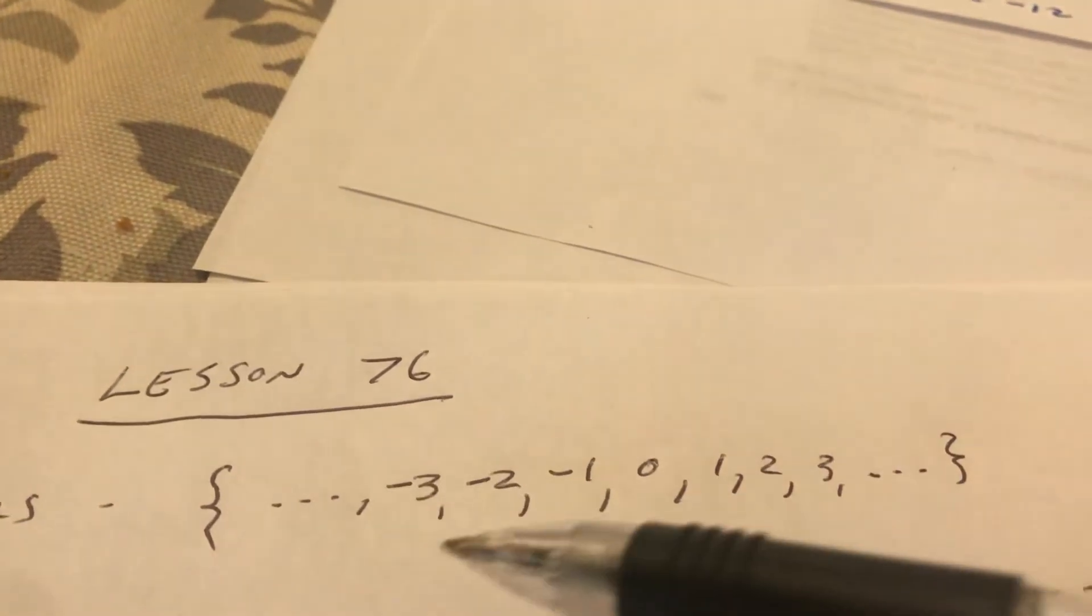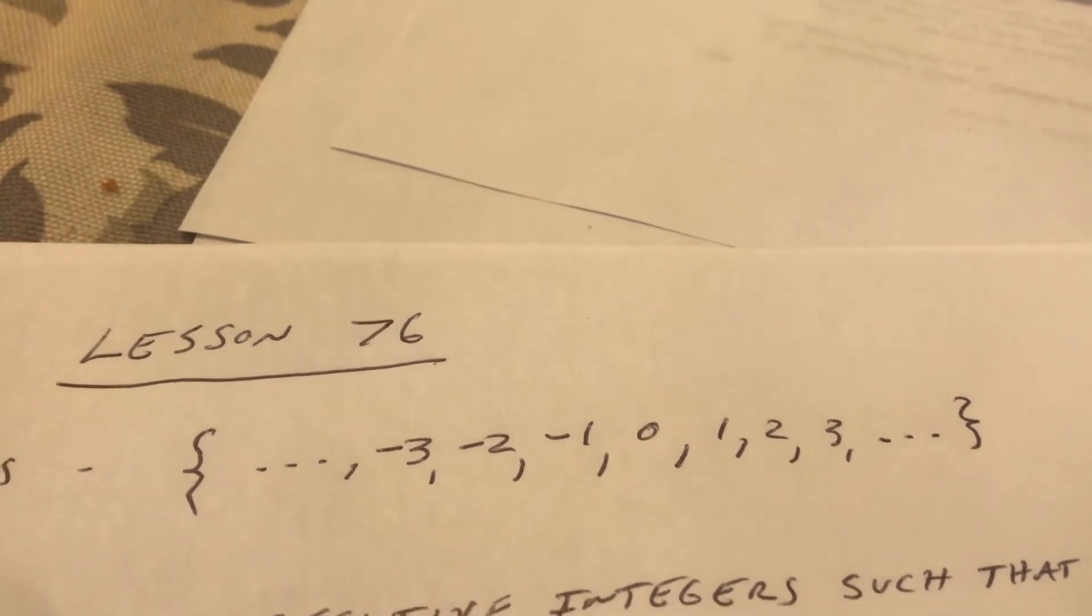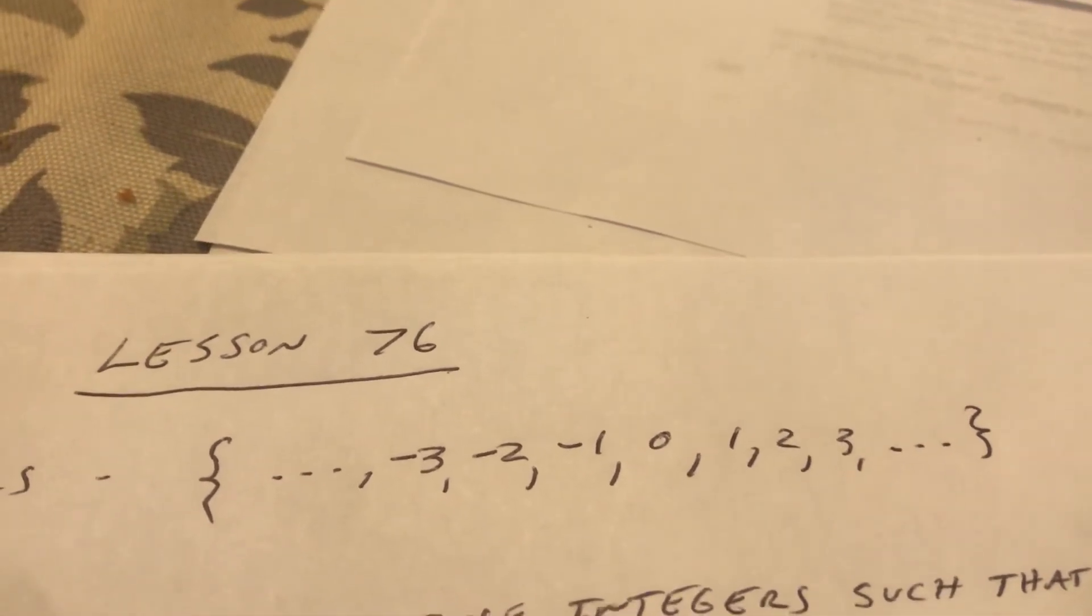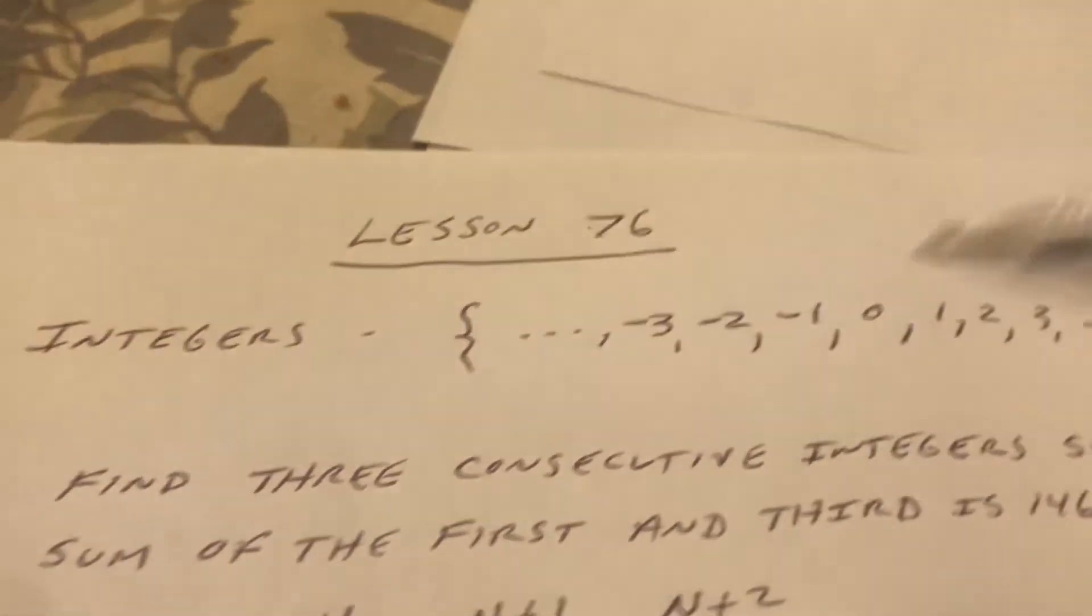These are integers. They're the whole numbers 0, 1, 2, 3, and all the negatives. No fractions, no square roots, no decimals. Those are integers—means whole. And consecutive means in a row.